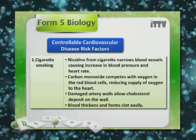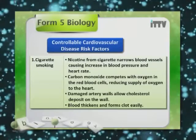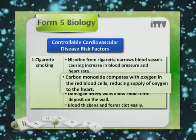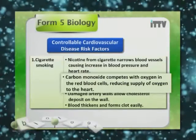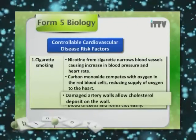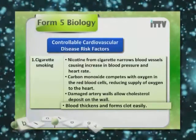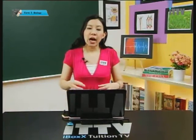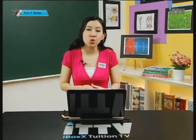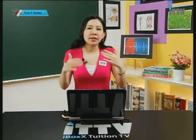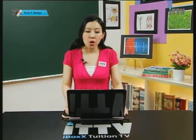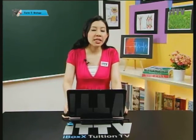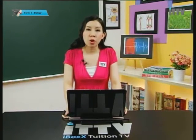Controllable risk factors include cigarette smoking — we can choose whether we want to smoke or not. Nicotine from cigarettes narrows blood vessels, causing an increase in blood pressure and heart rate. Carbon monoxide competes with oxygen in the red blood cell, reducing oxygen supply to the heart, because hemoglobin has a greater affinity for carbon monoxide than oxygen. Cigarette smoking also damages artery walls, allowing fatty deposits like cholesterol to build up in the inner wall, reducing the diameter of the artery and potentially leading to thrombosis.